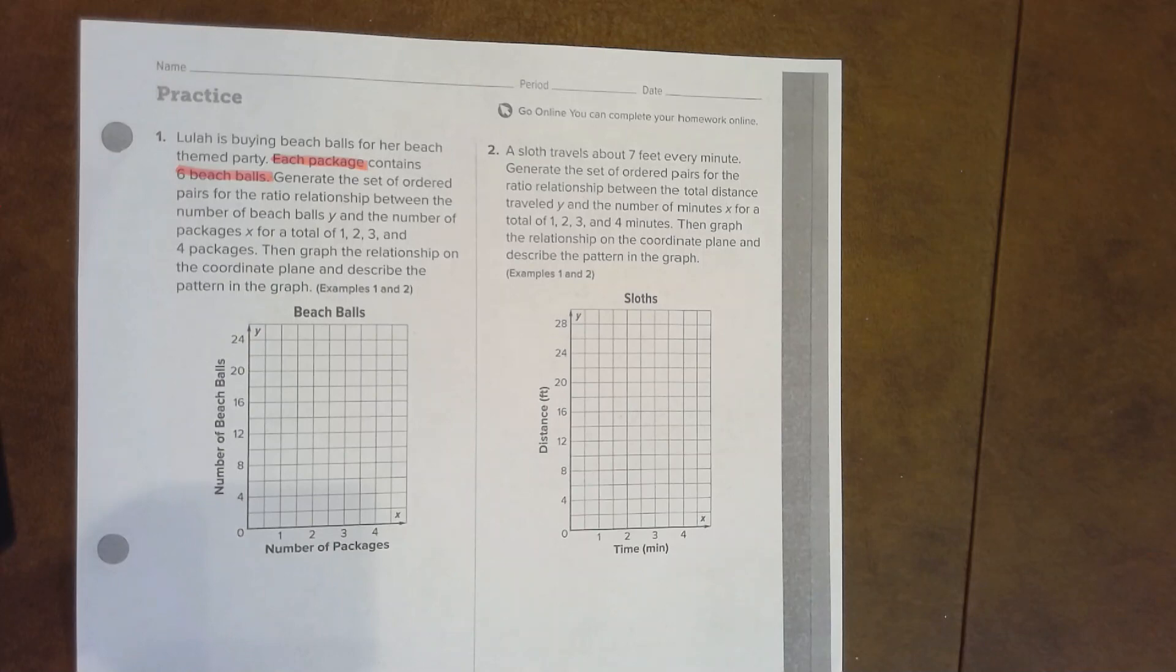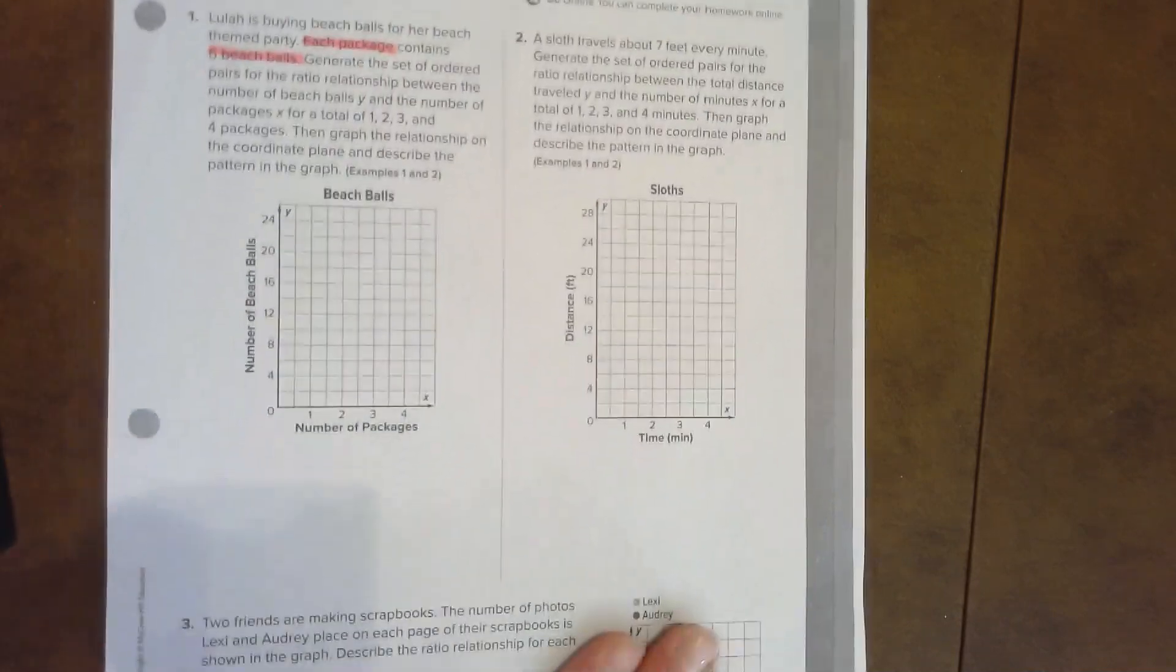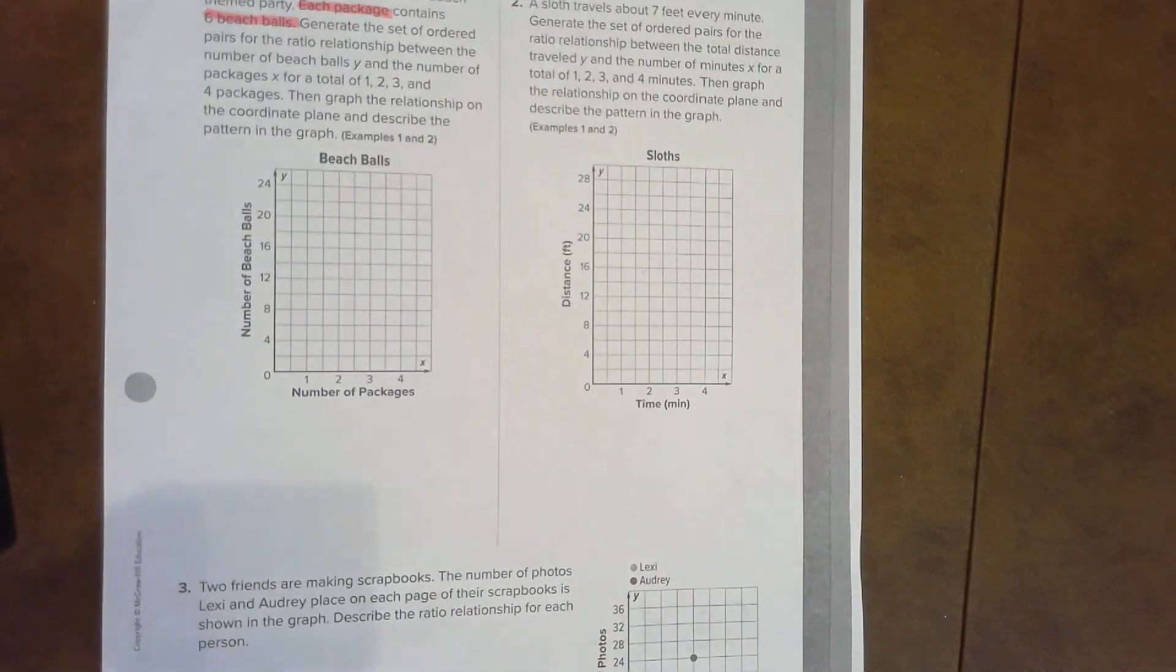Then graph the relationship on the coordinate plane below and describe the pattern in the graph. So we have a lot to do here. We need to make our table. Let's start with that.